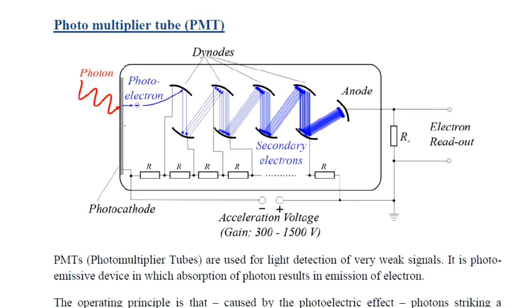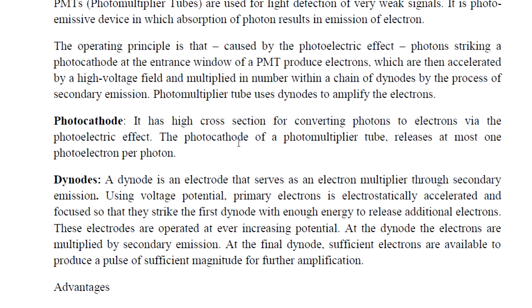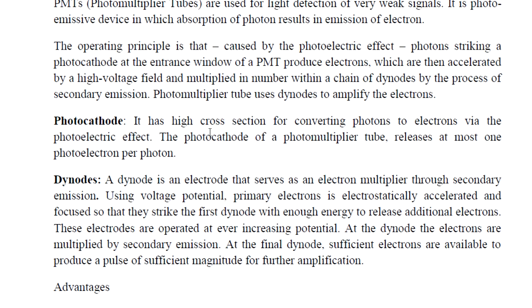If we have a photocathode, the photocathode releases photoelectrons. The dynodes will accelerate and amplify the signal. The photocathode converts photons to electrons. On the photocathode of a photomultiplier tube, the photocathode releases at most one photoelectron per photon, which corresponds to a single photoelectron.